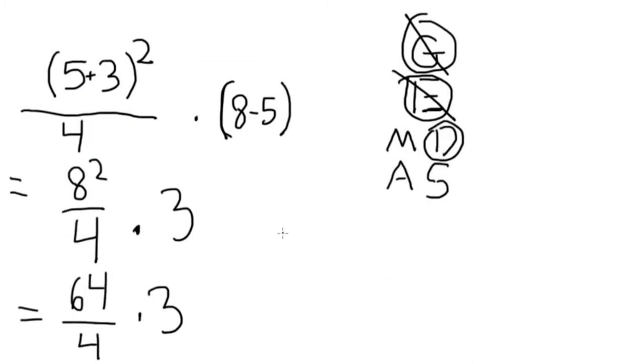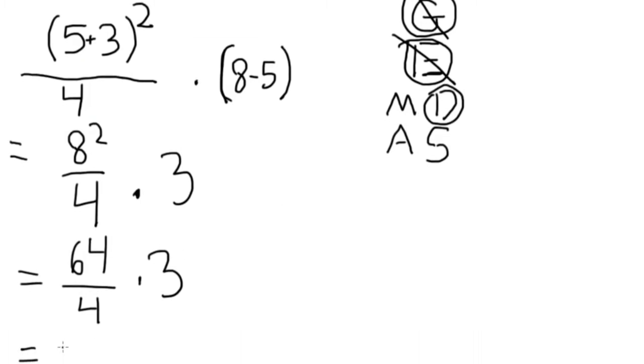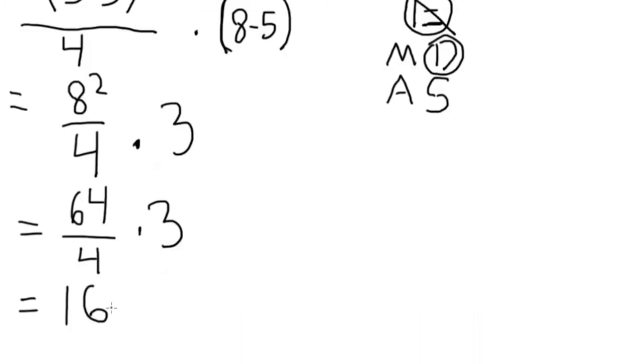Then, since it comes before the multiplication from left to right, divide 64 by 4. It will equal 16.